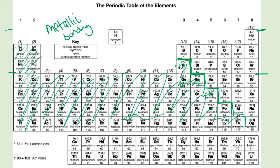The rest of the periodic table — the smallest section to the right of that line — these are our non-metals. Non-metals are either giant covalent or simple covalent. We just need to know the three giant covalent structures. Carbon is a giant covalent structure — you'll have done work on diamond and graphite at GCSE — and it has a very high melting point because lots of energy is needed to break the covalent bonds. There are two more giant covalent structures: boron and silicon. You need to know that those three elements are giant covalent with high melting points. All of the others are simple covalent with weak van der Waals forces between their molecules.